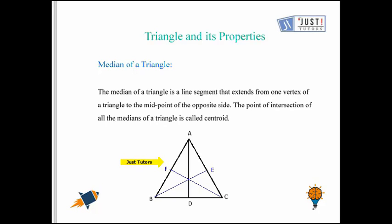The intersection point of these three medians is the centroid. As you can see here, this point is called O. So the point O is the centroid.